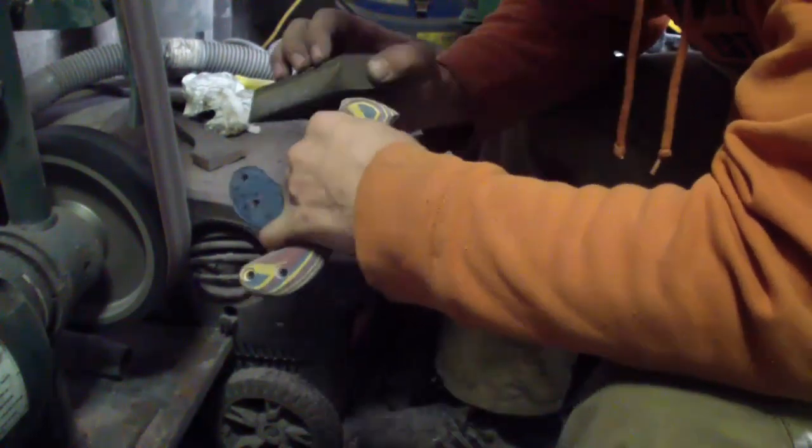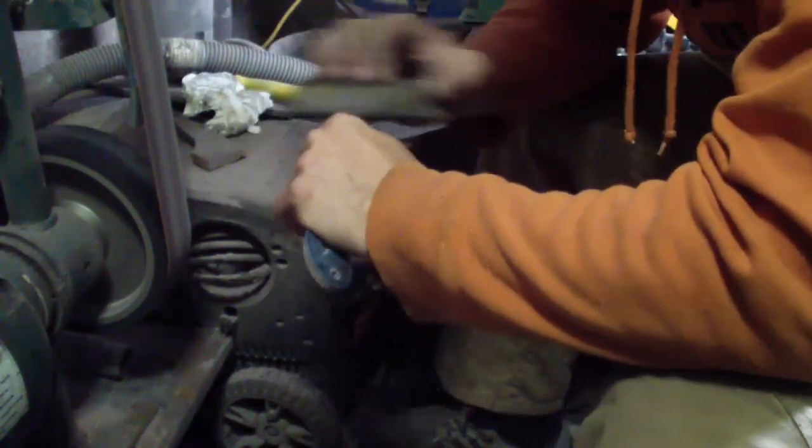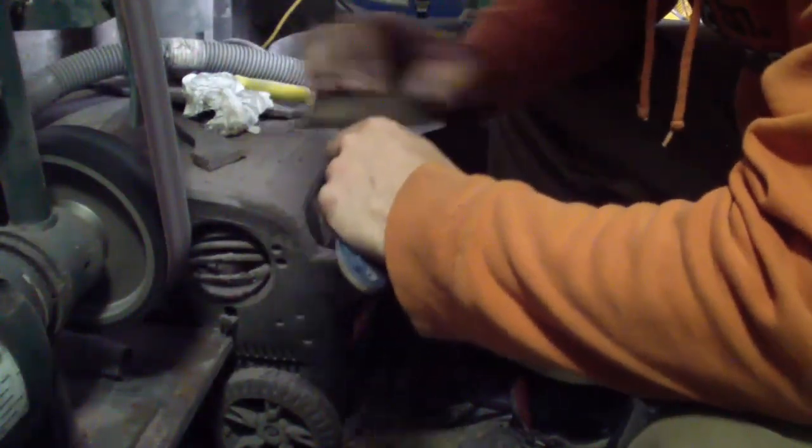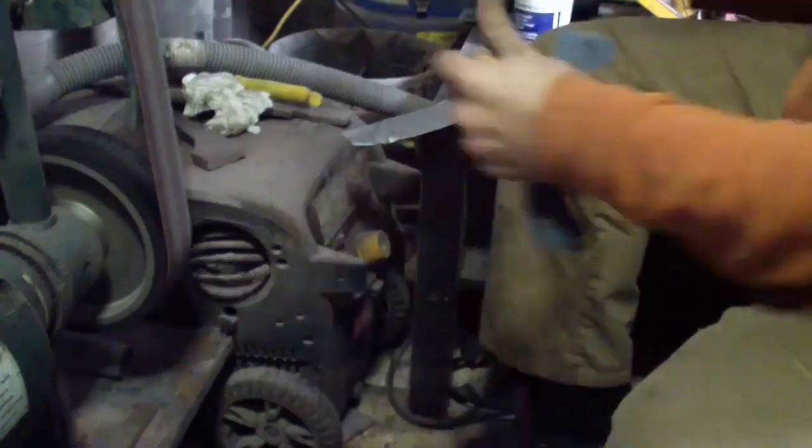So I got the bevels on it nice and rounded. I'm gonna do some basic hand finishing on that front because I won't be able to get there once I put the scales back on. So I'm doing it with the sanding sponges right now before I put the handles back together again.